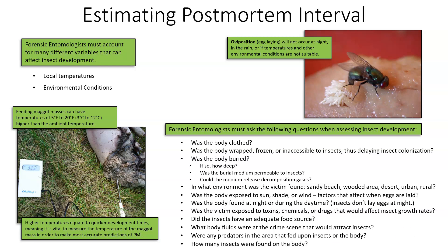How many insects were found on the body? Was it a single species or a bunch of species? If we can utilize a bunch of different species and use their known values, we can actually get a more accurate reading because we have more data points than if we just have one species to identify.